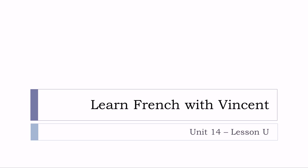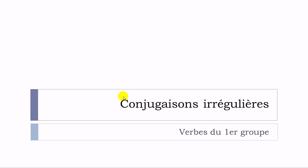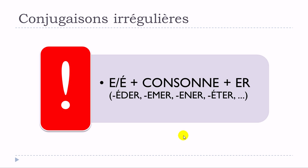Bonjour à tous and welcome to Learn French with Vincent. This is Unité 14, Leçon U. In this lesson, we'll see the conjugaisons irrégulières and we'll focus on verbs from the first group — specifically a category of verbs ending with E, or É (accent aigu), then a consonant, then ER.